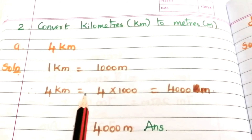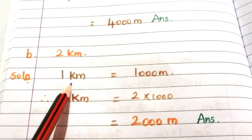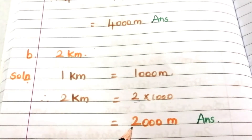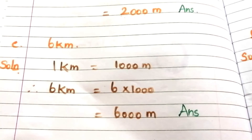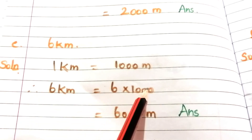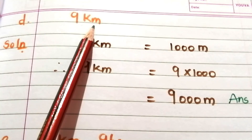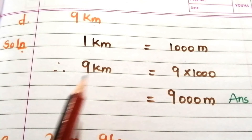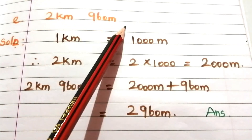Second problem set: convert kilometers to meters. Problem A: 4 kilometers. 1 kilometer equals 1000 meters, therefore 4 kilometers equals 4000 meters. Problem B: 2 kilometers. 1 kilometer equals 1000 meters, therefore 2 kilometers equals 2000 meters. Problem C: 6 kilometers equals 6000 meters. Problem D: 9 kilometers equals 9000 meters.